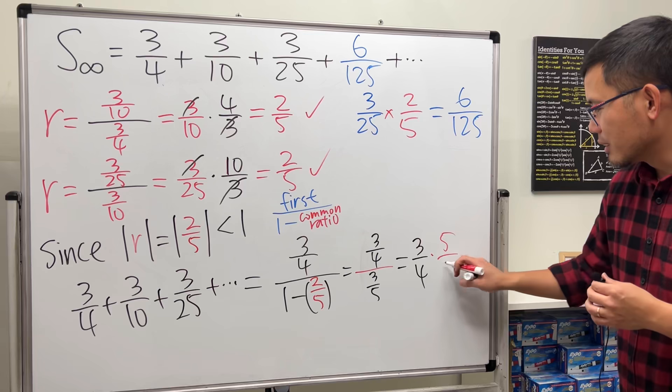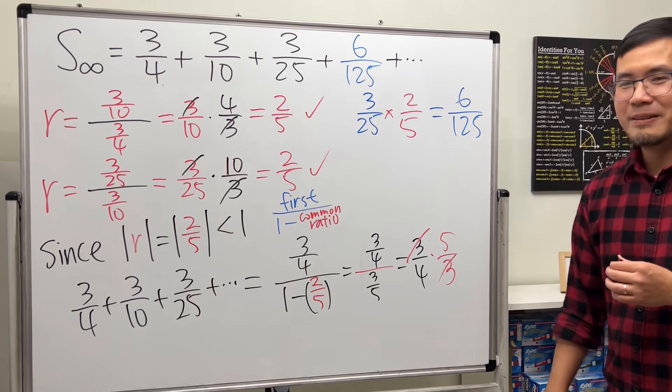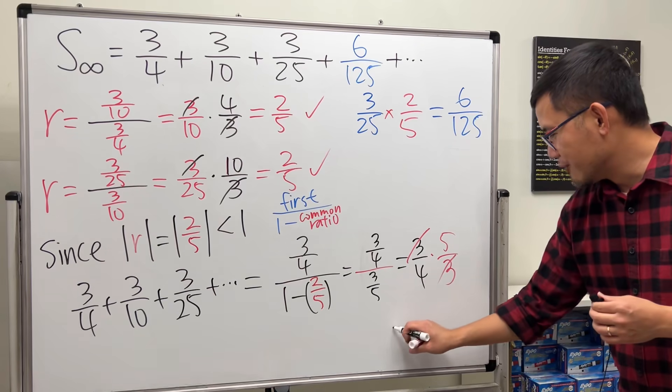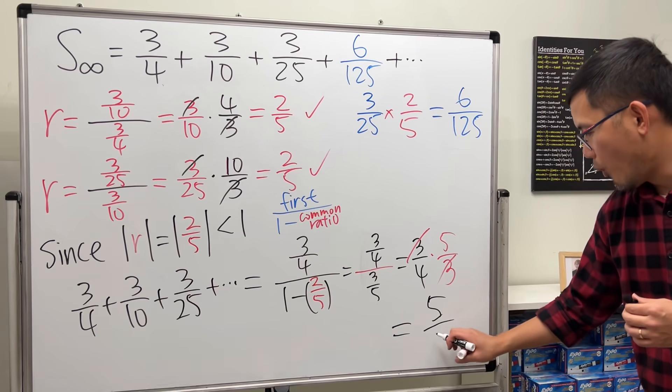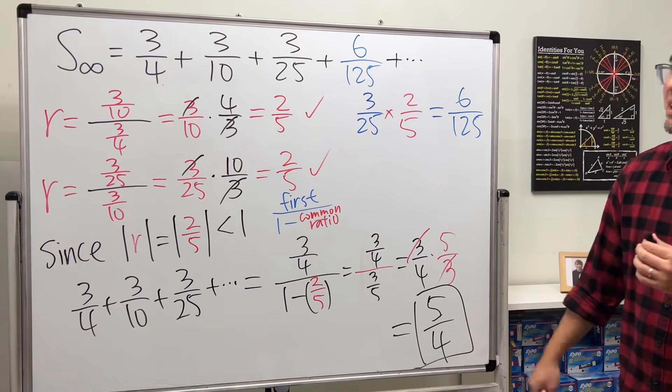Then 3 cancels out again. Yeah, very cool numbers. So final answer: 5 over 4. Yeah, just like that.